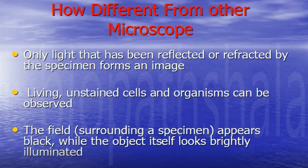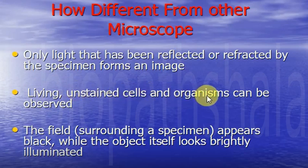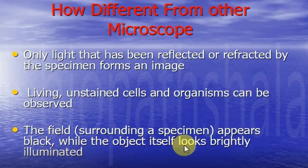How is dark-field microscope different from other microscopes? First, only reflected or refracted light which passes through the specimen forms an image. Living or unstained cells can be observed in the dark-field microscope. The field appears black while the object itself looks brightly illuminated, as we have seen in the previous image.